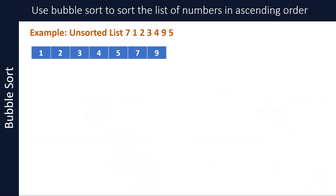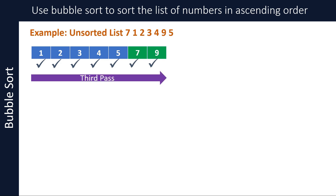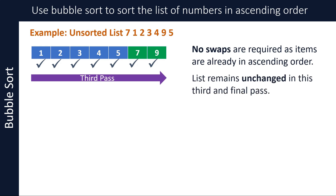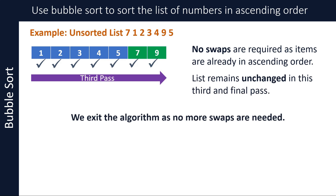We make a third pass through the list and repeat the steps. Since all the items in the list are in the correct order — smallest to largest — there are no swaps required in this third and final pass. The list remains unchanged from how it stood at the end of the second pass, and we exit the algorithm. I hope you now understand how the bubble sort algorithm works. If you are still unclear, I would suggest going back to the beginning of this example and watching from there again.